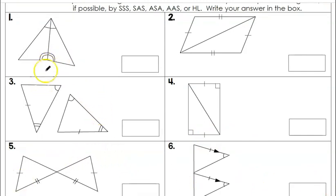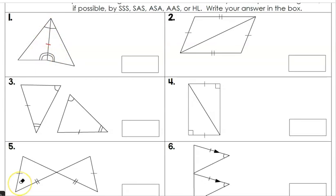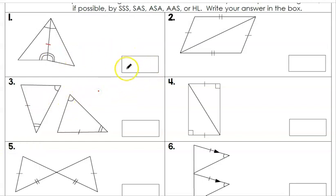For number one, we're told that these two angles are congruent corresponding angles between the two triangles, and since they share a side, that shared side would also be congruent by the reflexive property. So this is Angle-Side-Angle.